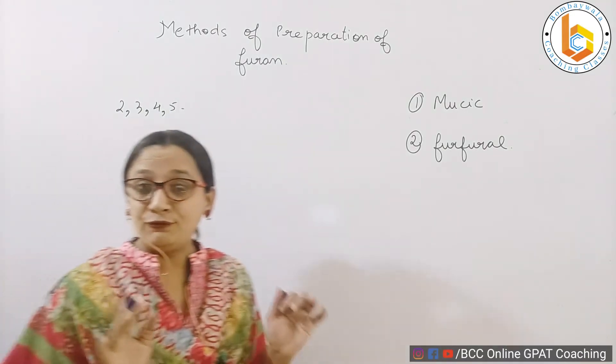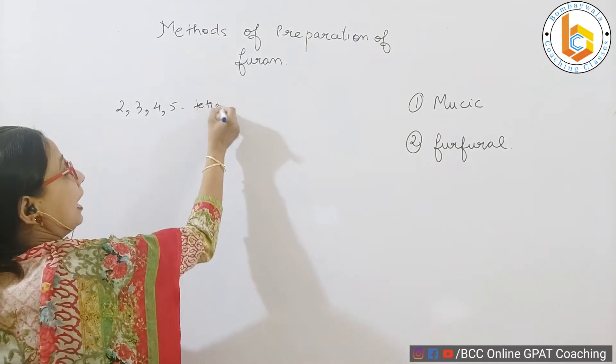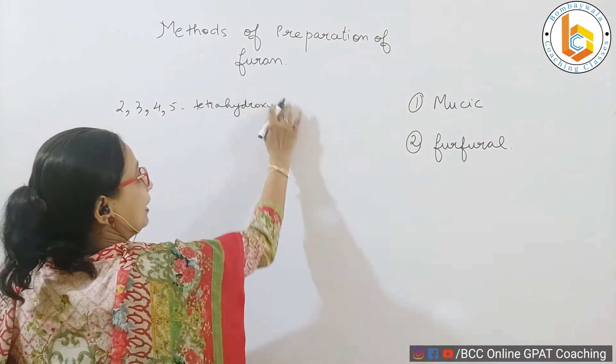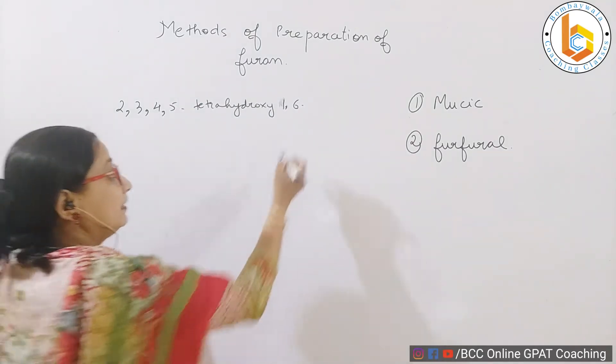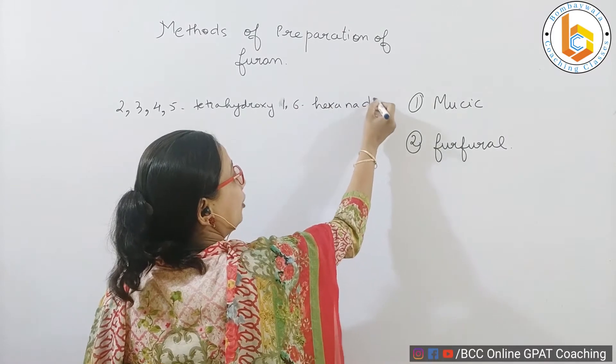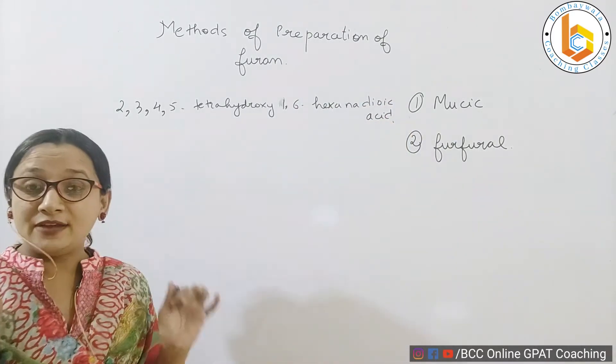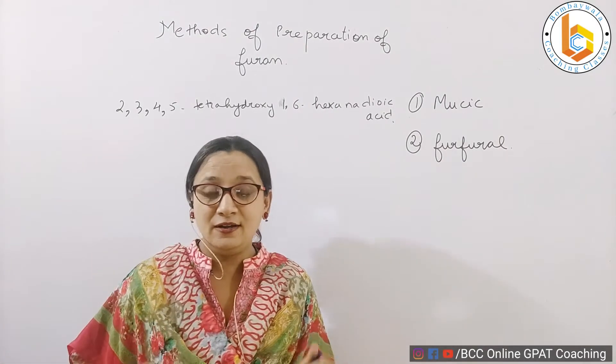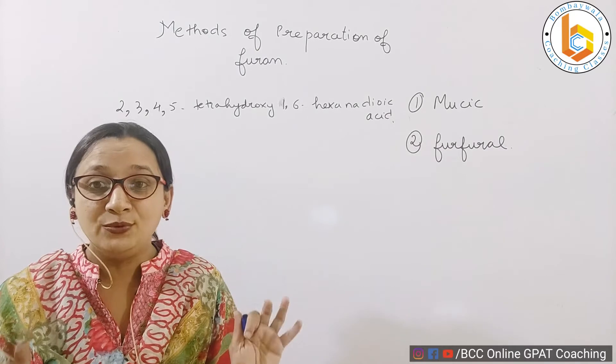Two, three, four, five tetrahydroxy one six hexa hexanedioic acid. If you can read this entire structure and if you can understand, then nothing is difficult for you. Now let me take, let me tell you how to write the structure of mucic acid.